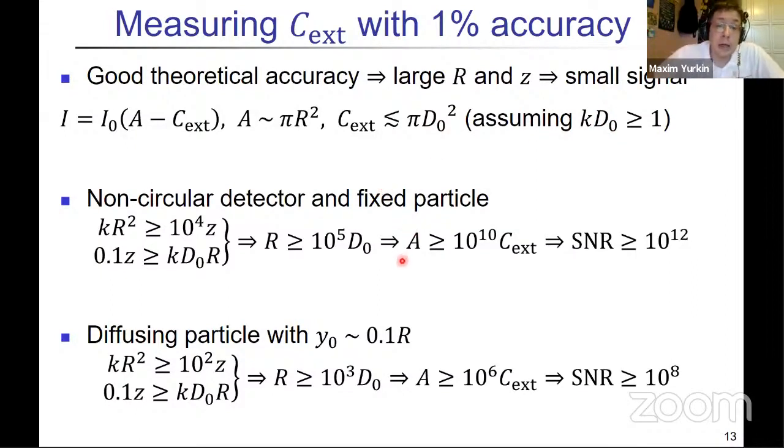You can actually do some estimates. For example, you have a non-circular detector and a fixed particle—you see there are two expressions here. This is for the theoretical accuracy, and this one involves the condition that the angular size of your detector should be at least 10 times smaller than the first diffraction lobe, otherwise you would see not only forward scattering amplitude but it will be significantly corrected. The problem is that here you have R and z in one direction and here in the opposite direction, and they can kind of contradict each other. If you multiply these two you get this equation—basically the radius of the detector should be a hundred thousand times more than the particle size. That gives you a huge difference in area, and that means that if you want to measure this extinction cross-section within one percent, then the signal-to-noise ratio should be larger than 12 orders of magnitude. That's huge.